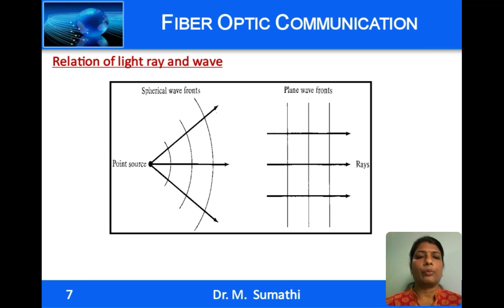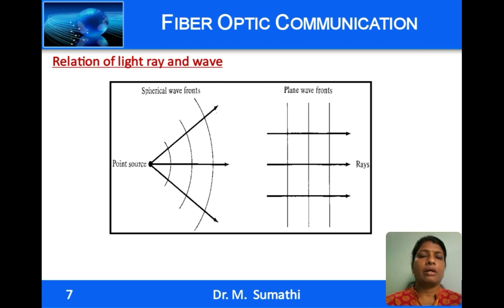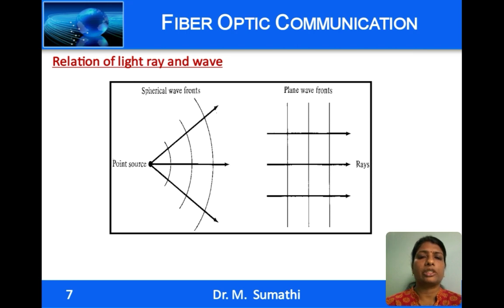Considering the relationship between light ray and wave: the electromagnetic waves produced by an optical source can be represented using spherical wavefronts. Wavefronts are the locus of points having the same phase in a wave train. When the wavelength of light is very small compared to the obstacle or opening it encounters, these spherical waves appear as straight lines and can be represented by plane wavefronts. To each plane wavefront a ray can be associated in a perpendicular direction, giving the direction of propagation.